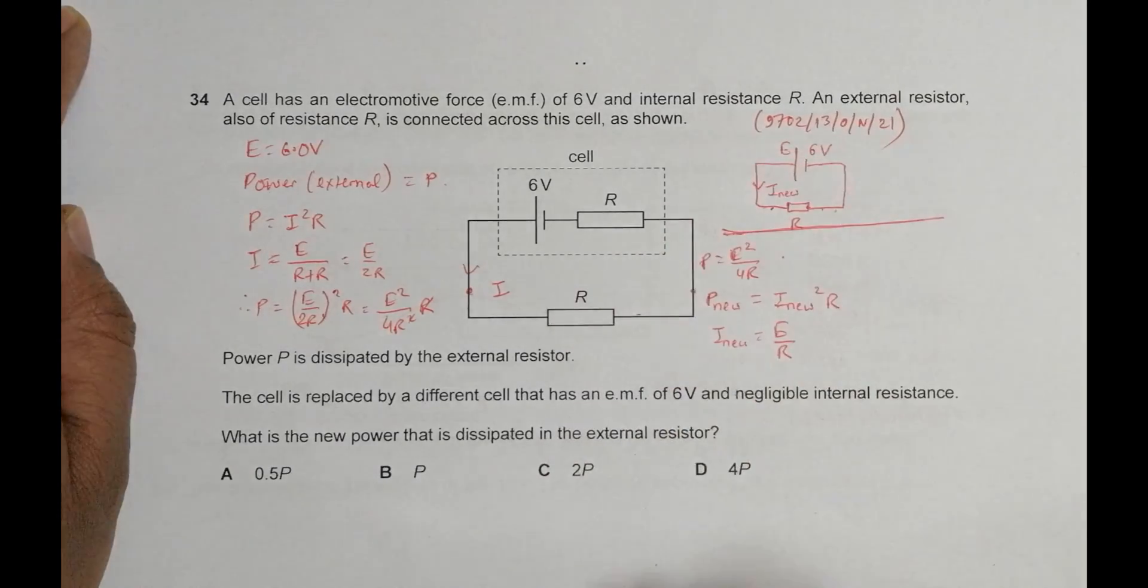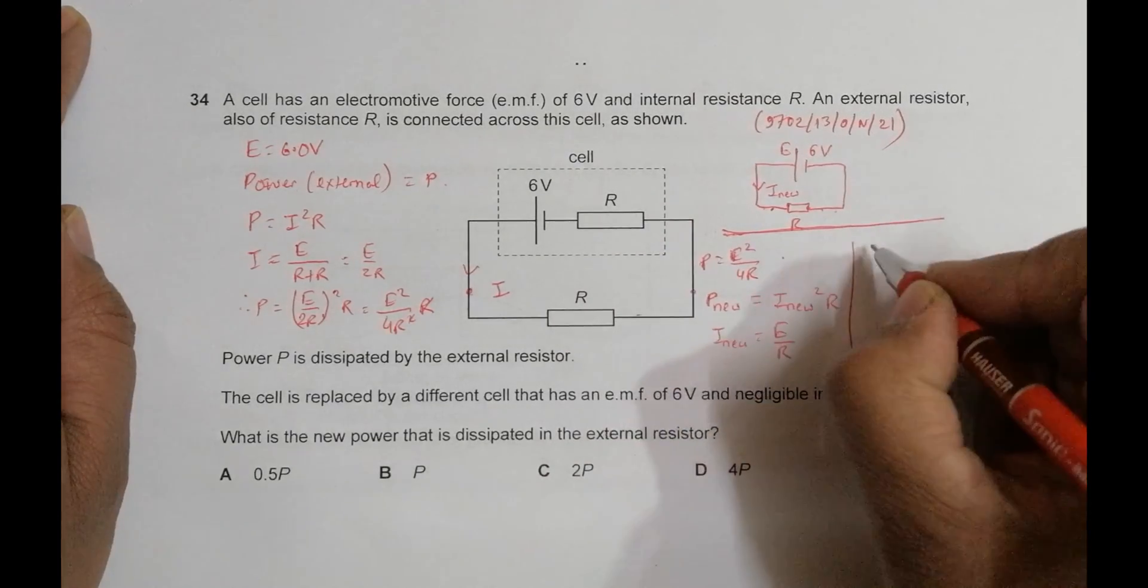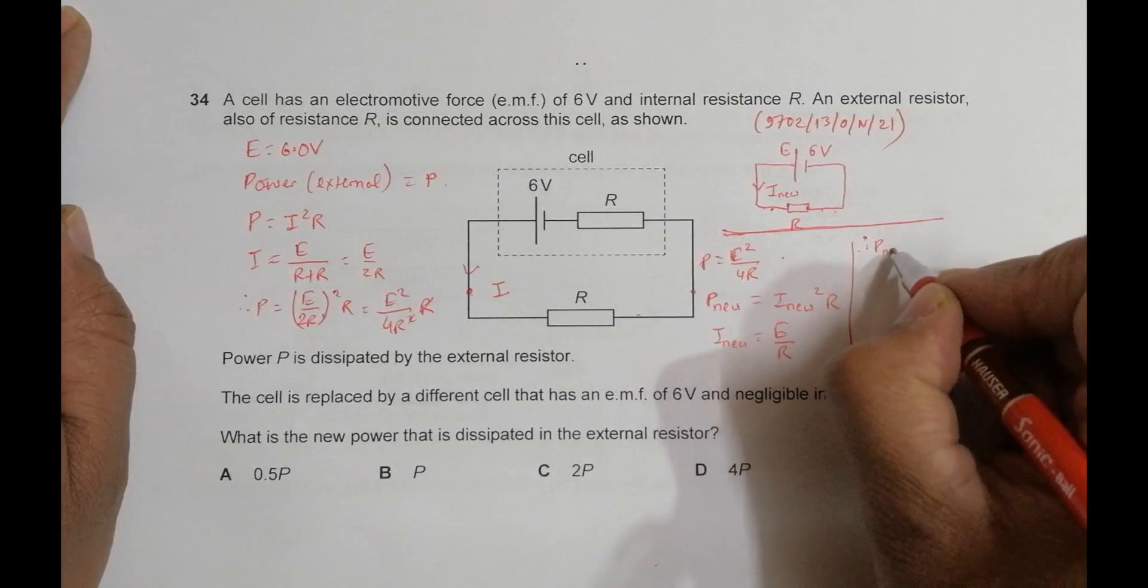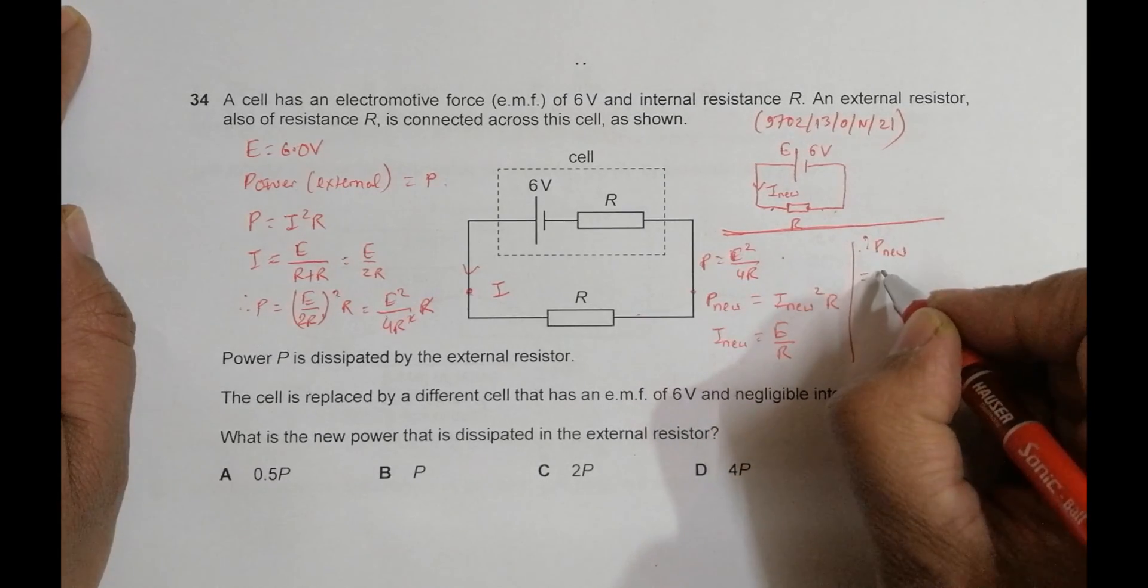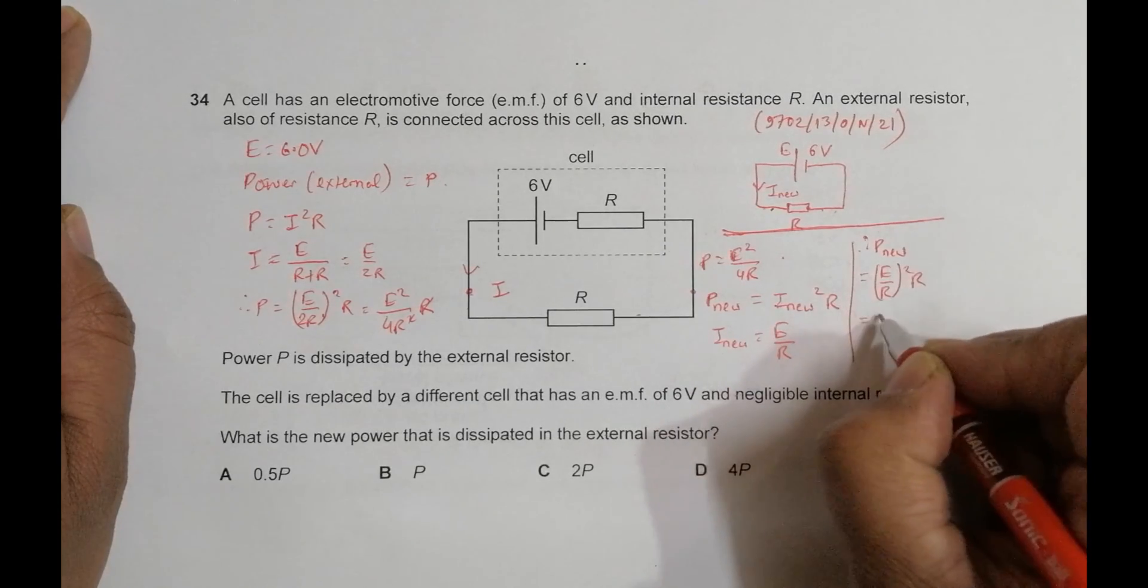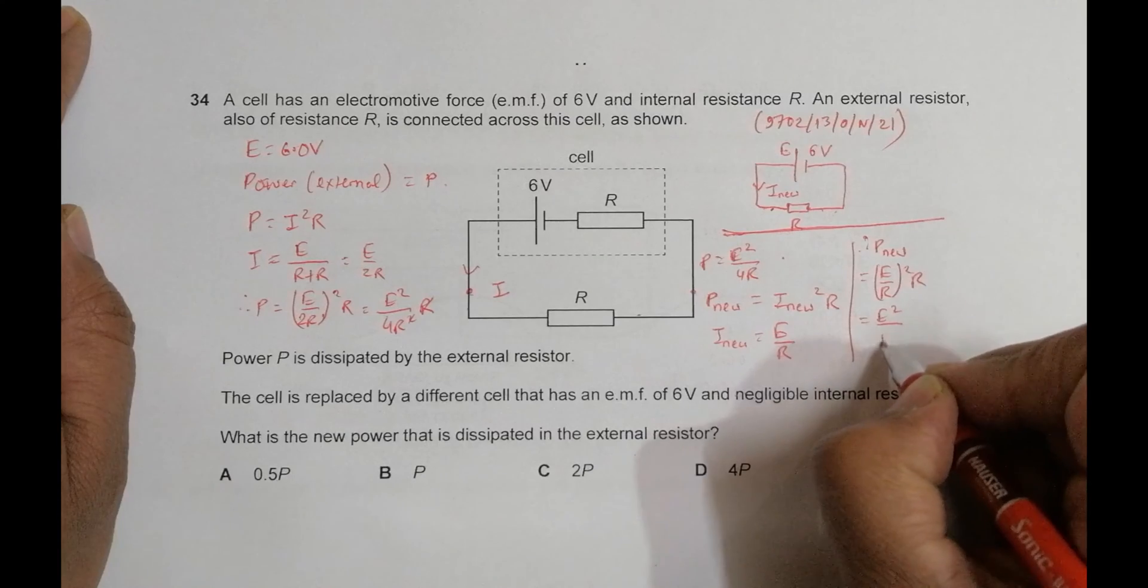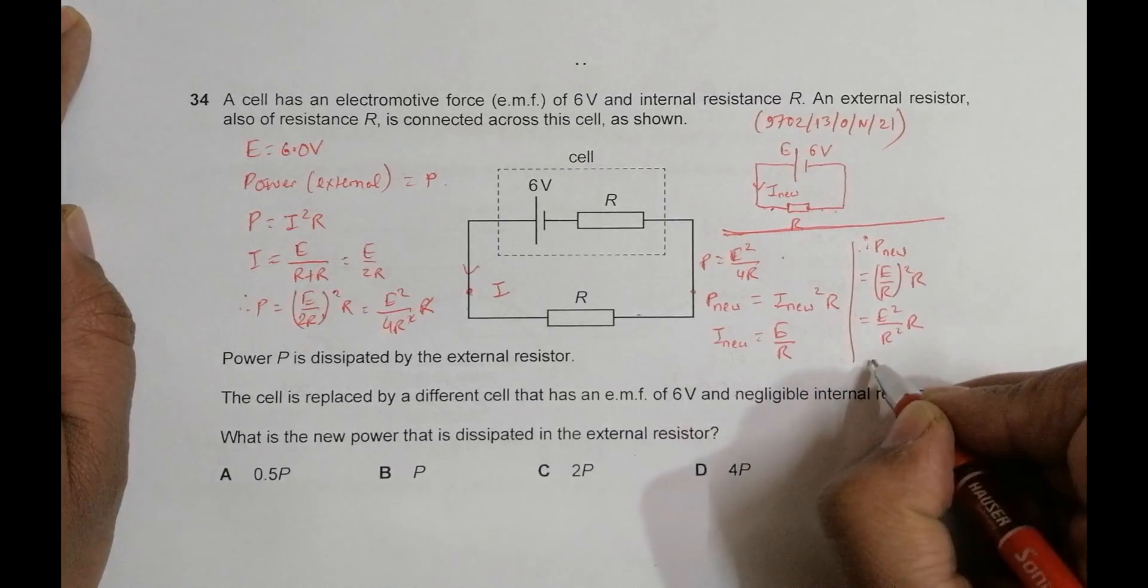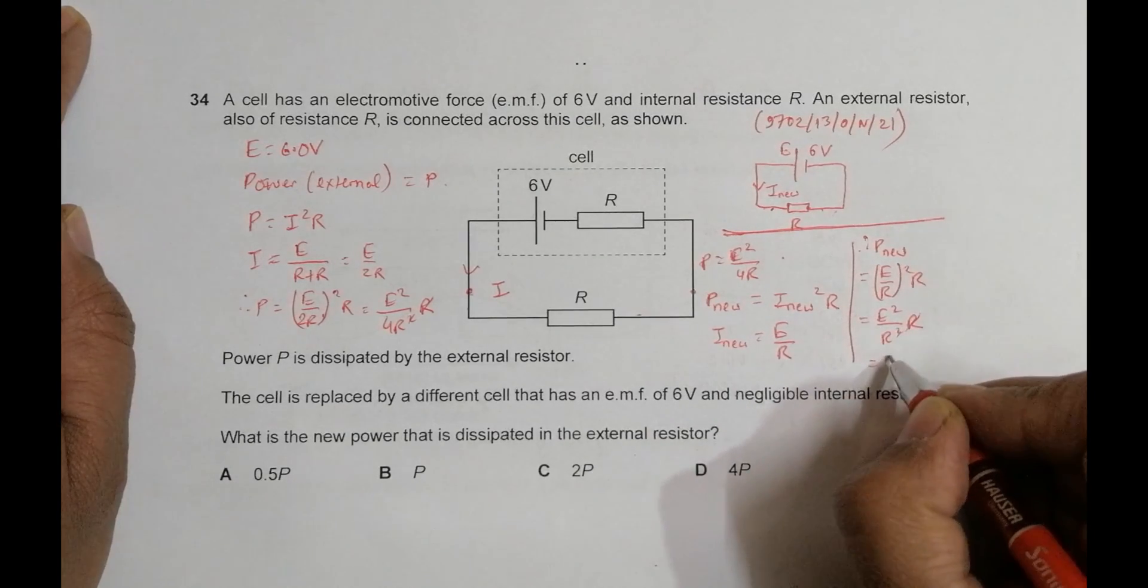Therefore, P_new = (E/R)² × R = E²/R² × R = E²/R.